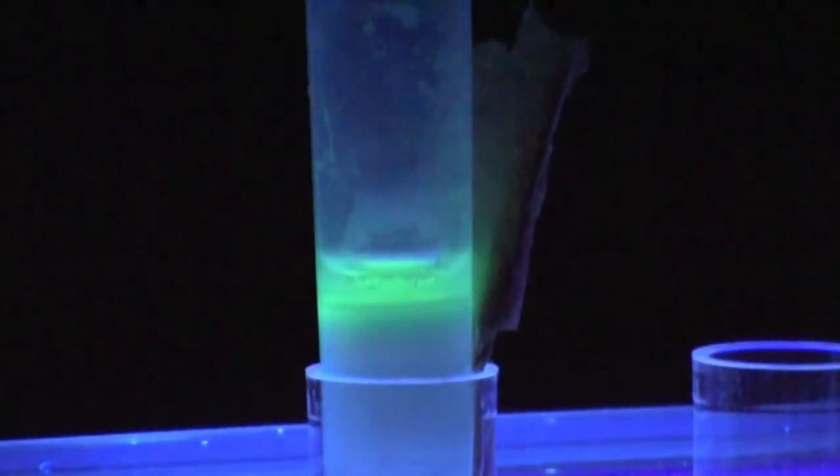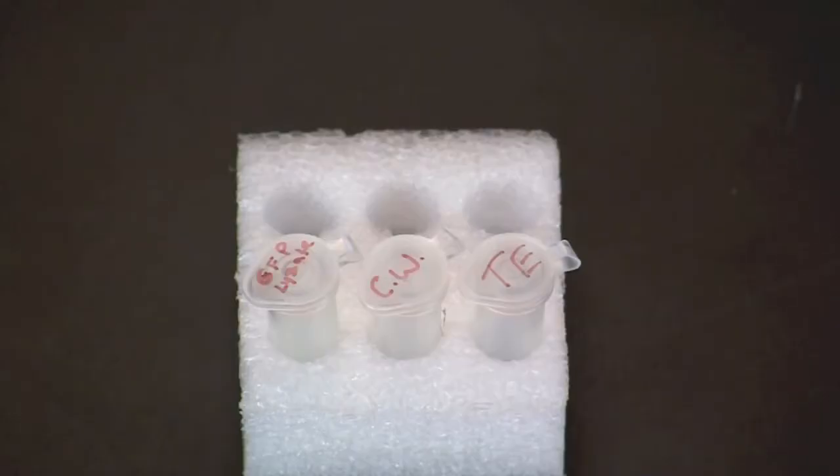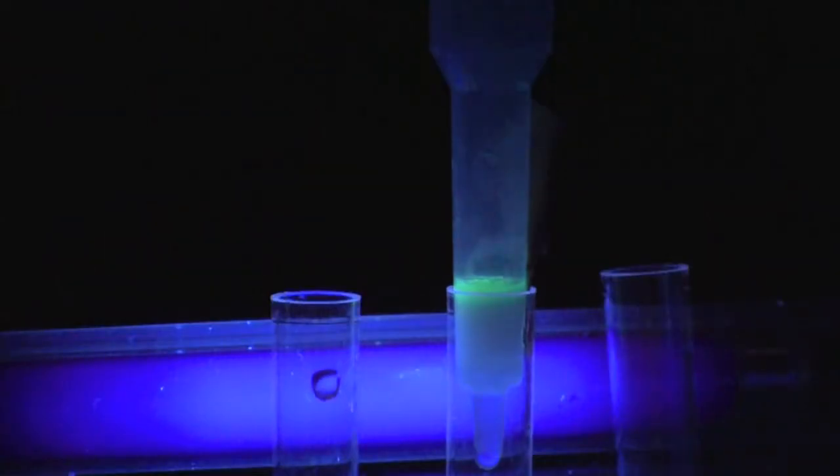Allow the lysate to enter the column bed until the meniscus is within 1 to 2 millimeters of the surface of the resin. Next, add 250 microliters of column wash buffer. Wash buffer is a medium salt solution.